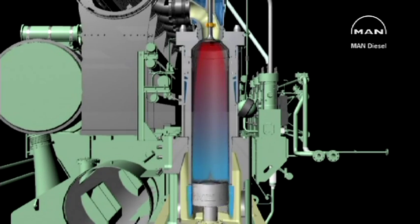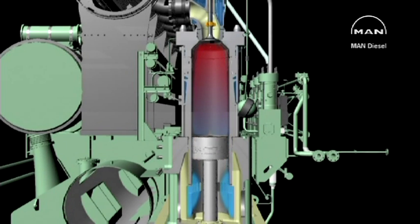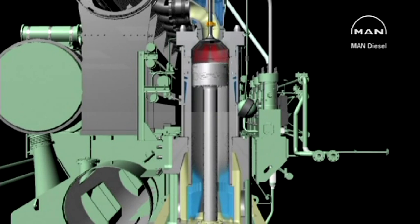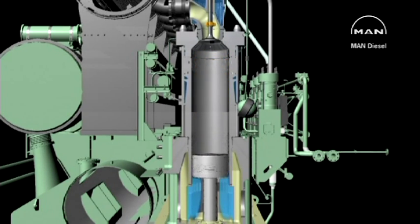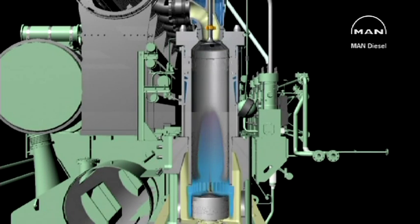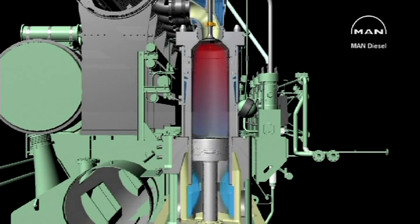The air is again compressed, fuel is injected, ignited, the gases expand. The exhaust valve opens, then the scavenge air ports, the cylinder scavenged, and the cycle is repeated.